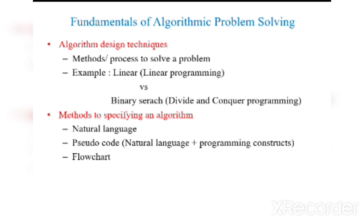The sixth step: methods to specify an algorithm. We'll be having three methods to specify an algorithm. One is natural language, which is understandable by human beings easily. The second step is pseudocode, which is a combination of natural language plus programming constructs. The third one is flowchart.